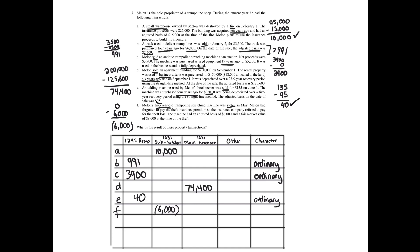We're done with individual transactions — now we net. Everything in Section 1245 is already ordinary, so we go to the Section 1231 sub-hodgepodge pot first. We net the sub-hodgepodge: $10,000 gain plus negative $6,000 loss equals $4,000 net gain. When there's a net gain in the sub-hodgepodge pot, we move everything from the sub-hodgepodge to the main hodgepodge pot. So the $10,000 and negative $6,000 both move over to the main hodgepodge.